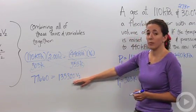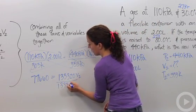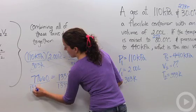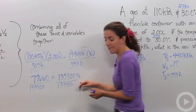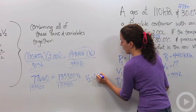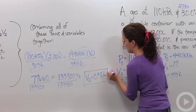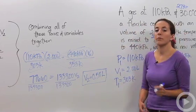Okay, so then I want to isolate my variable, so I'm going to divide by 133320, 133320. And I find that my new volume is 0.58 liters. And that is how you do the combined gas law.